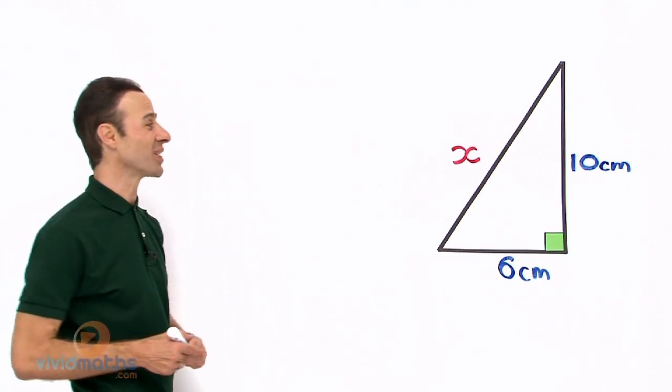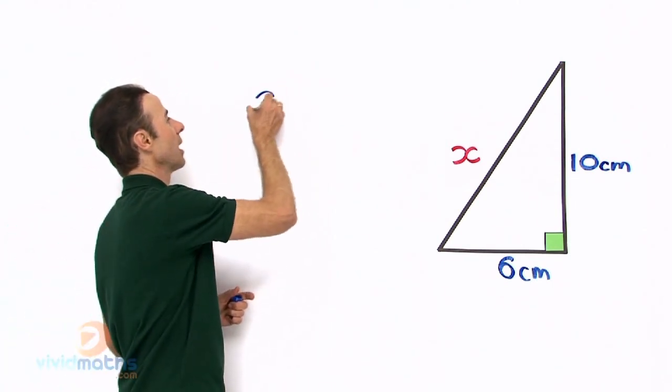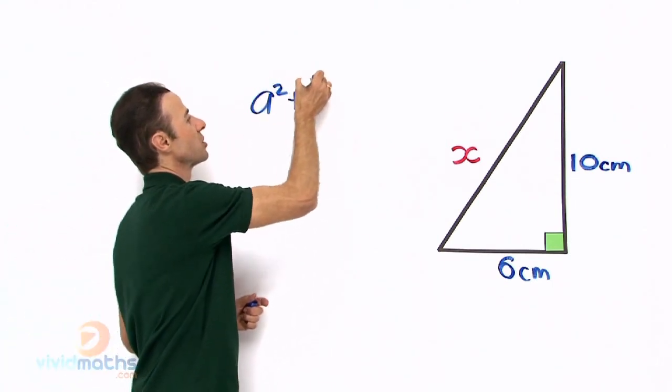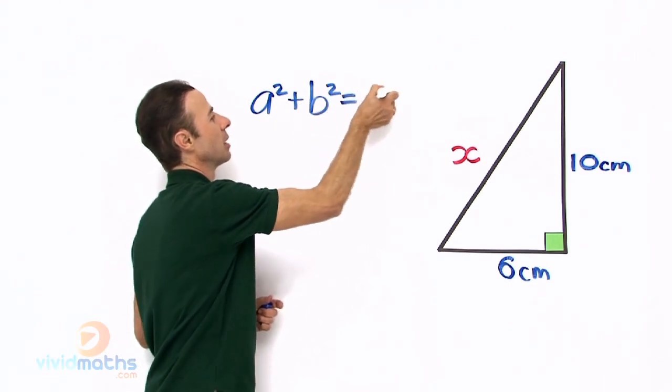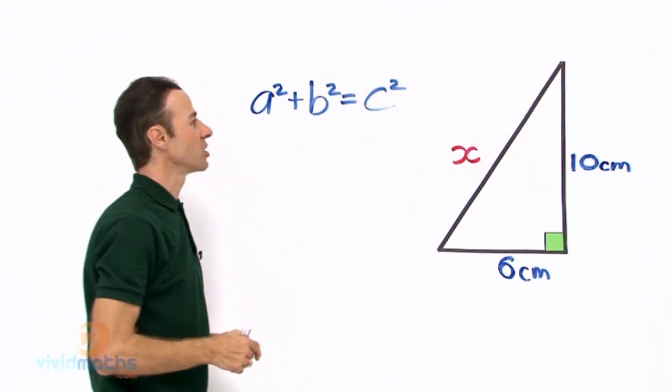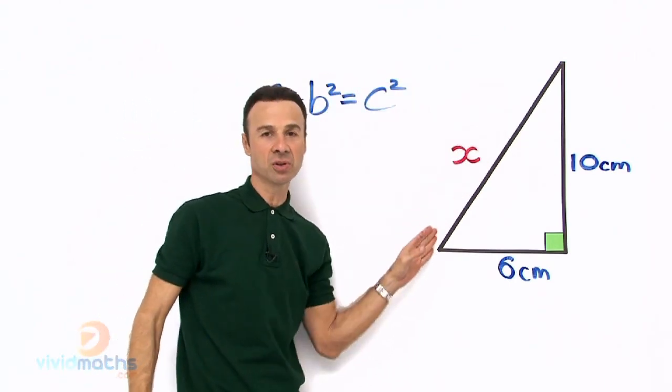So let us write down Pythagoras equation. Well, it is a squared plus b squared equals c squared, and c usually denotes the hypotenuse right over there.